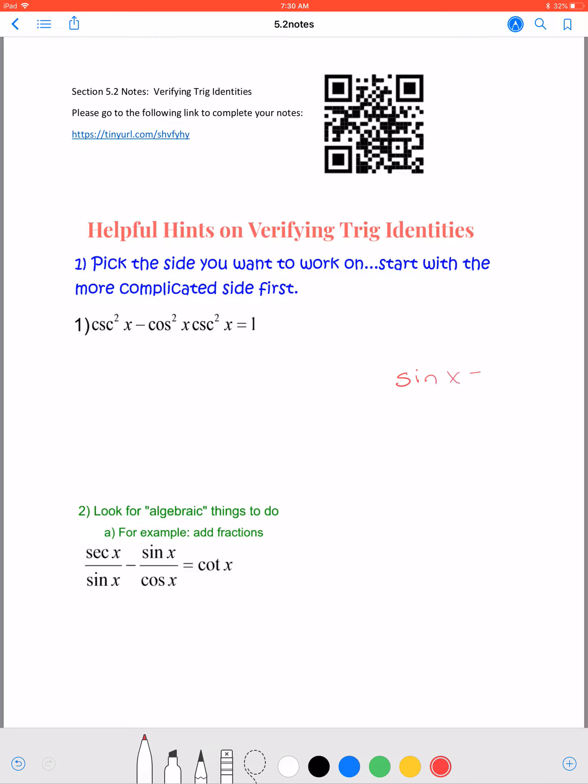Sine of x equals 0, which technically has several answers: 0, π, 2π, 3π, and we would keep going from there. So essentially we could summarize that as x equals π times some integer k.